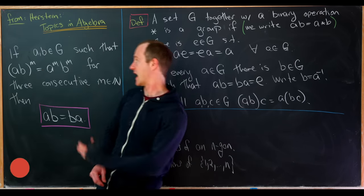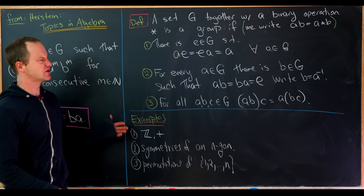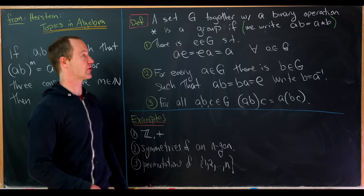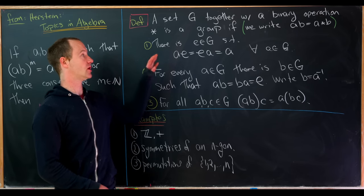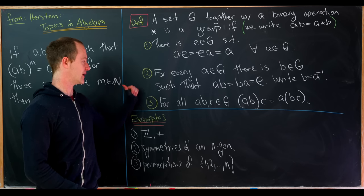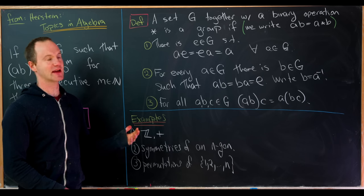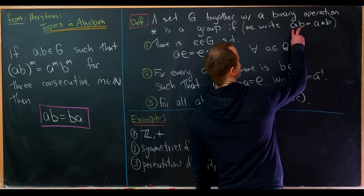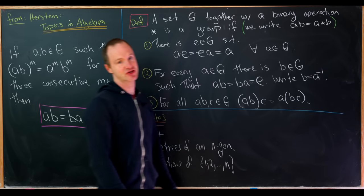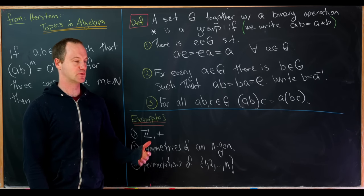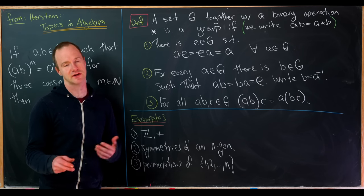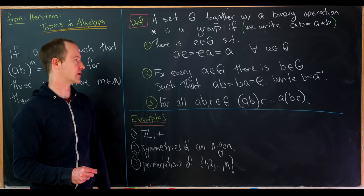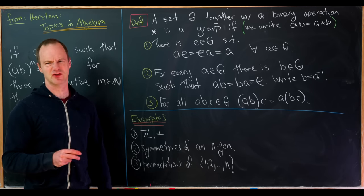Before we look at our problem and solution, let's recall what a group is for anyone who doesn't know. A set G together with a binary operation, which we'll call star, is called a group if it satisfies three axioms. We use the notation where we write a next to b, so ab is the same thing as a star b. For an abstract group we just put the two elements next to each other and think of it as a general product.